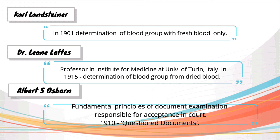Coming to Karl Landsteiner — as we all know, in the year 1901 he described a method to determine blood group with the help of fresh blood. But at crime scenes we mostly find dried blood stains, not fresh blood. For that, Dr. Leone Lattes, a professor at the Institute of Medicine at the University of Turin, Italy, in the year 1915 determined blood group from dried blood stains.